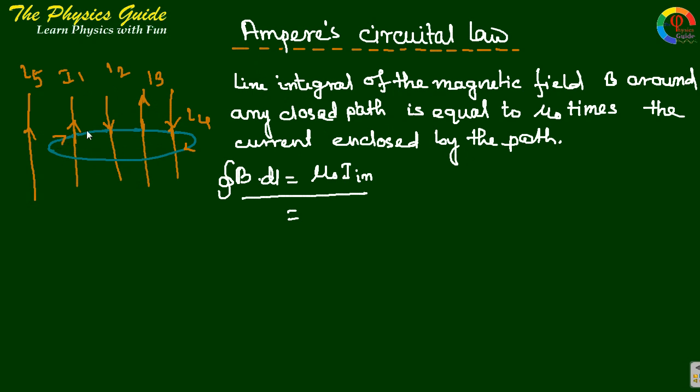So if we take an imaginary loop covering the current I1, I2, I4, then there should be resultant magnetic field at each point of the loop.